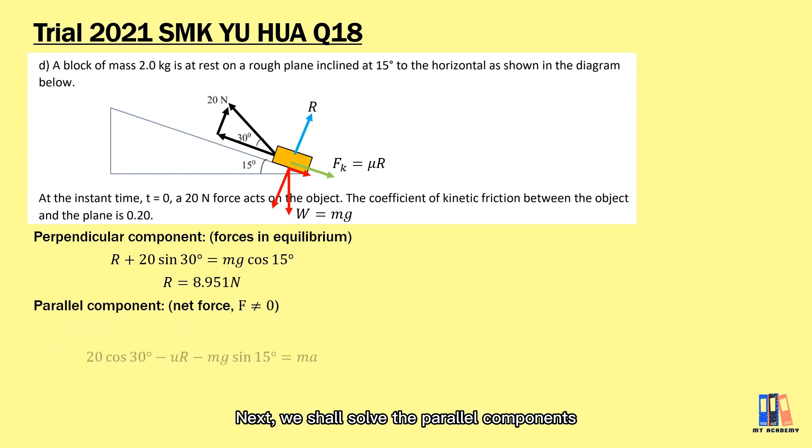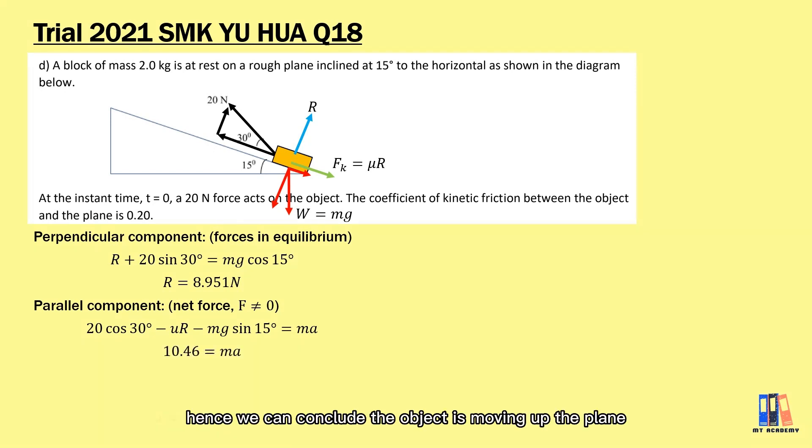Next we shall solve parallel components. Object is expected moving up the plane. We take the parallel component of 20 newton force minus the friction and also minus mg sin 15°. We have a net force of 10.46 newton. Hence we can compute the object is moving up the plane with constant acceleration.